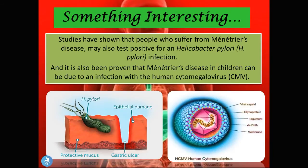Something very interesting to note about Ménétrier's disease is that studies have shown that people who suffer from it may also test positive for an H. pylori infection. H. pylori is a bacteria that is the most common cause of gastritis and ulcers worldwide — I did do a presentation on it so I won't go into too much detail. Just keep in mind that people with Ménétrier's disease may also test positive for H. pylori. It's also been proven that Ménétrier's disease in children can be due to an infection with the human cytomegalovirus (CMV).